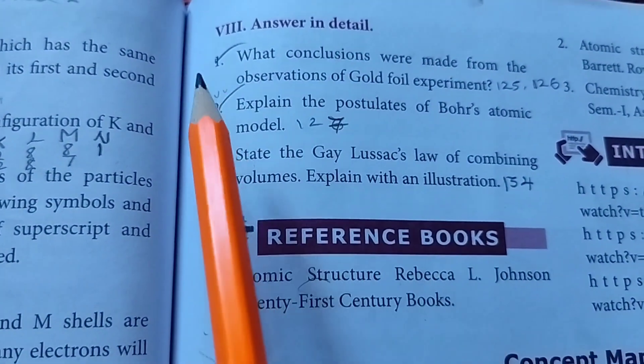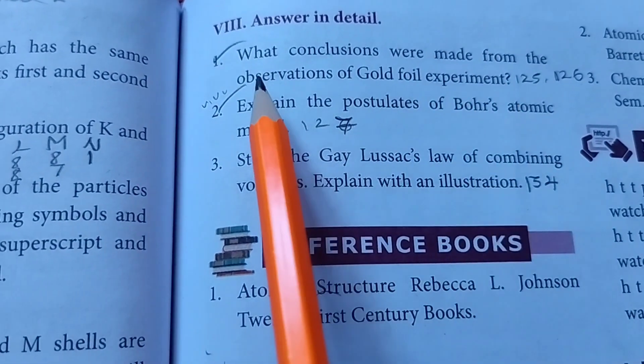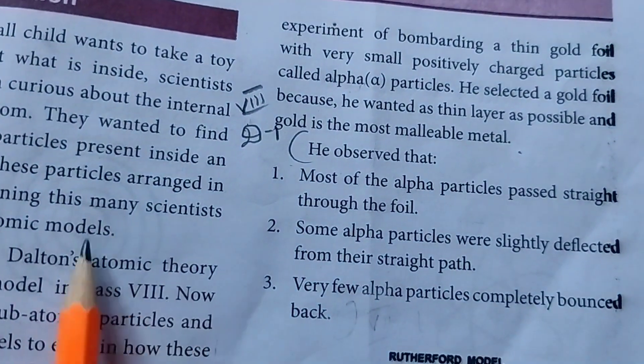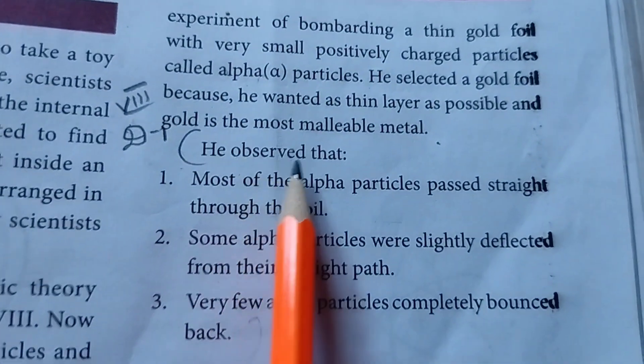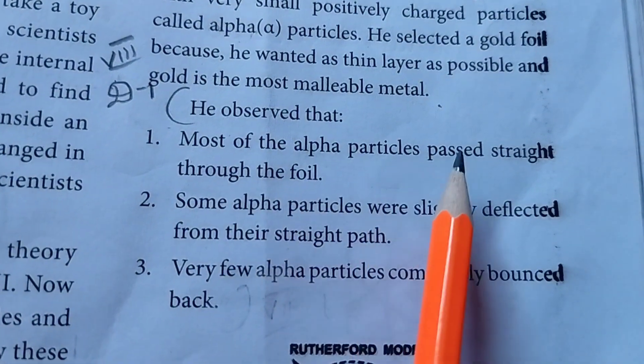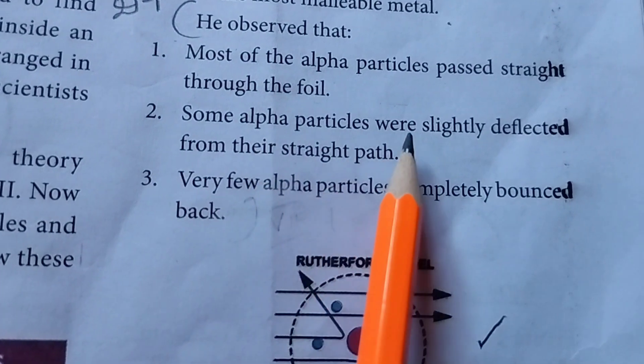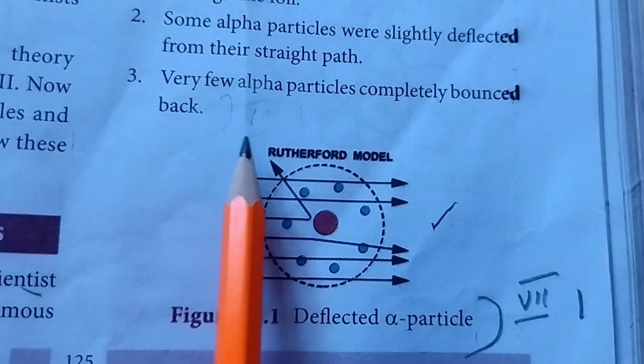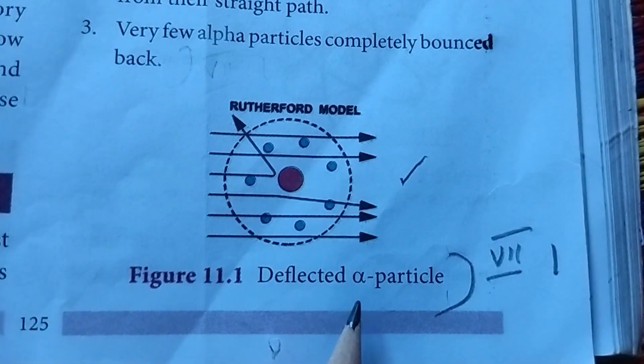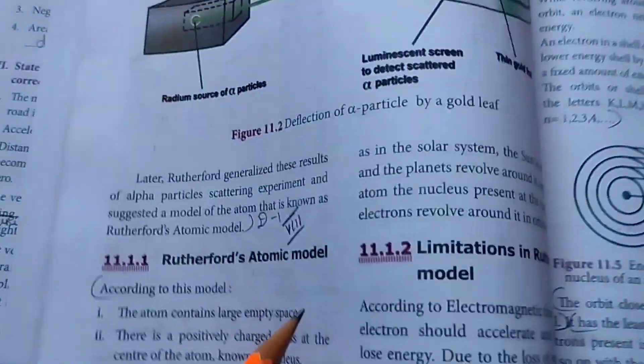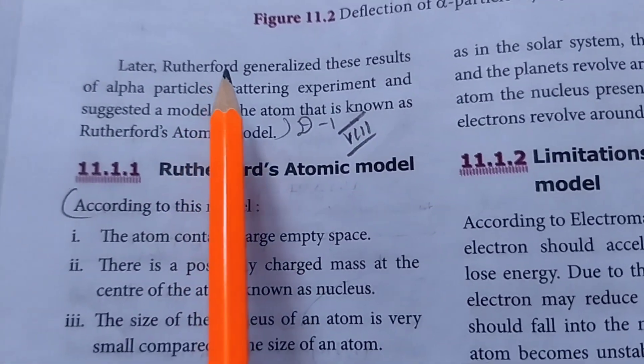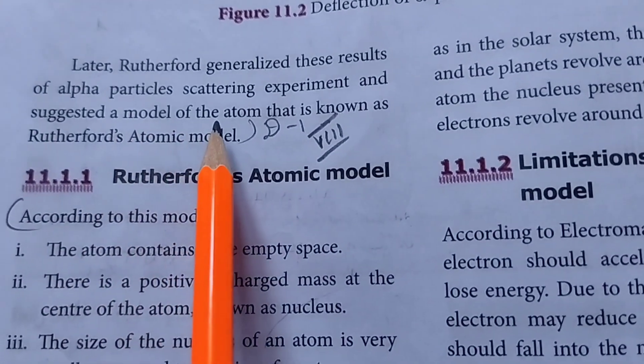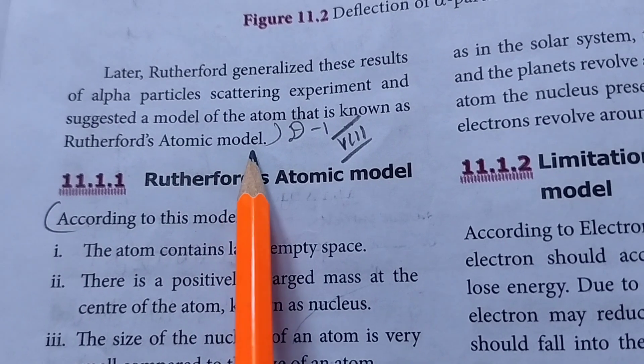Then Roman letter 8. Answer in detail. First one. What conclusions were made from the observation of gold foil experiment? Take page number 125 then 126. He observed that, first point, most of the alpha particles passed straight through the foil. Second point, some of the alpha particles were slightly deflected from their straight path. Third one. Very few alpha particles completely bounced back. In the diagram, draw upon you, deflected alpha particle. This is the next page. Later, Rutherford generalized these results of alpha particles scattering experiment and suggested a model of the atom that is known as Rutherford atomic model. This is the first detail answer.